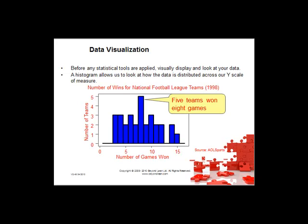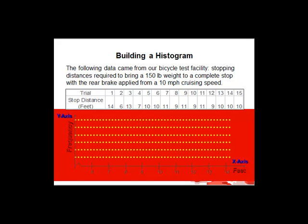The first thing you need to do when looking at any type of stats is to visualise it. Before we apply any statistical tools, visually display and look at your data. A histogram allows us to look at how the data is distributed across a Y scale of measure. The following data came from our bicycle test facility — stopping distance required to bring a 150-pound weight to a complete stop with a rear brake applied from a 10 miles per hour cruising speed. Simply plot the frequency of occurrence of each number, count the total number of samples or N, and plot that on a piece of paper.